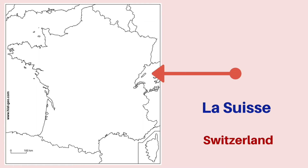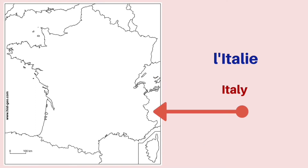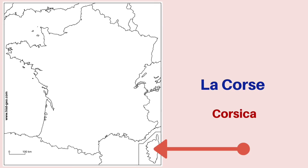Towards the east of France, you have la Suisse, which is Switzerland. Towards the southeast, you have l'Italie, which is Italy. Of course, you also have la Corse, which is Corsica, but that is not a neighboring country of France — it is a part of the French Republic.